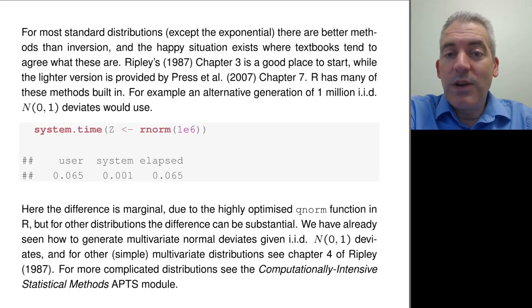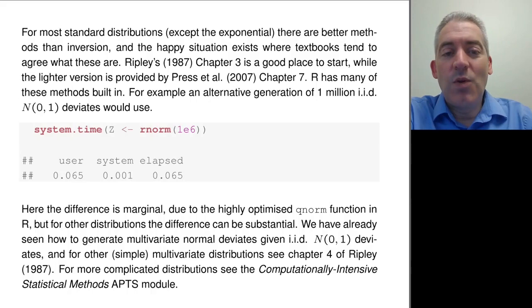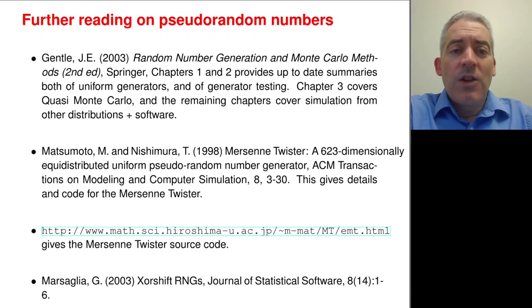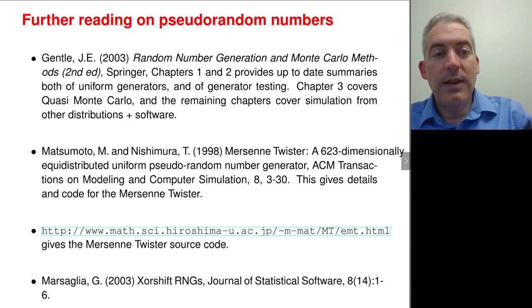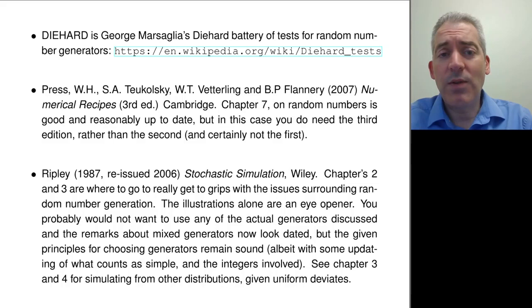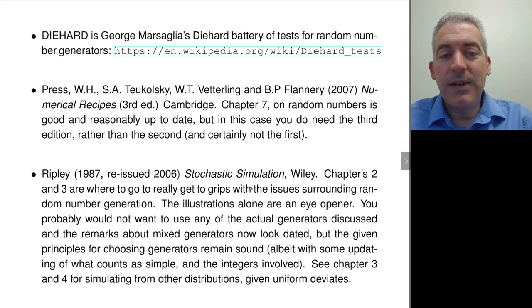We're starting to stray into computationally intensive methods territory, so that's pretty much all I wanted to say about random number generators. The book by Gentle is a nice gentle introduction to random number generation and Monte Carlo methods. If you want to know more about the Mersenne Twister or XOR shift generators there are links provided. The Diehard tests are worth knowing about, though there are some more modern alternatives these days as well. Ripley's book, although a little dated in places, is still a nice introduction to the methods of stochastic simulation. So that's random number generation.